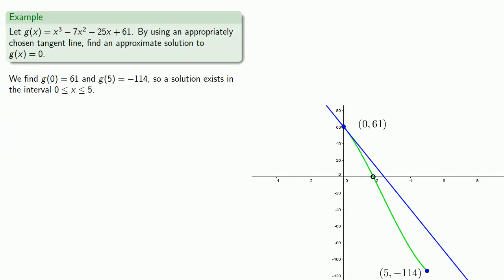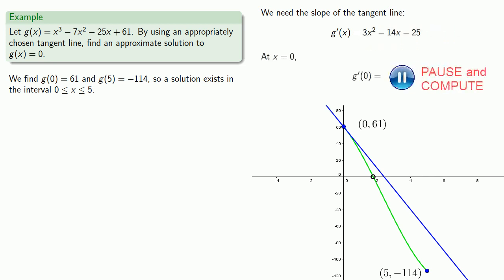So at x = 0, g(0) = 61, and we'll need the slope of the tangent line. So we'll differentiate. At x = 0, we find the derivative is equal to -25. And so we're able to write the equation of the tangent line.